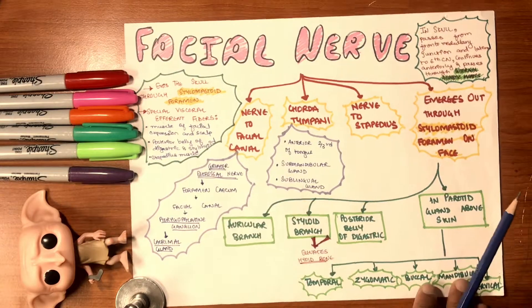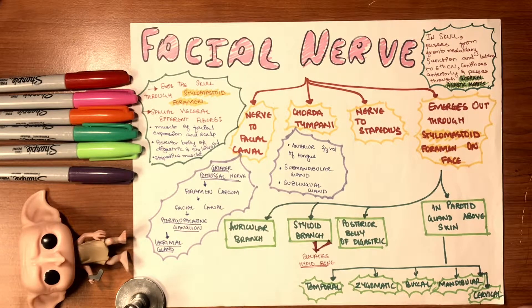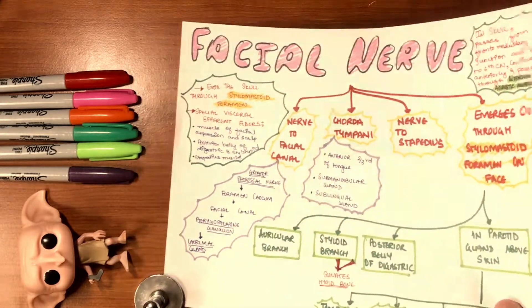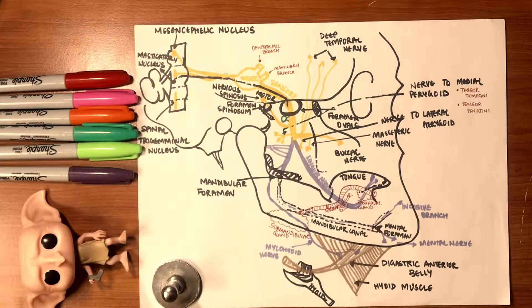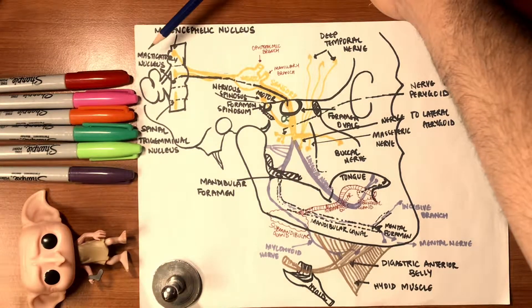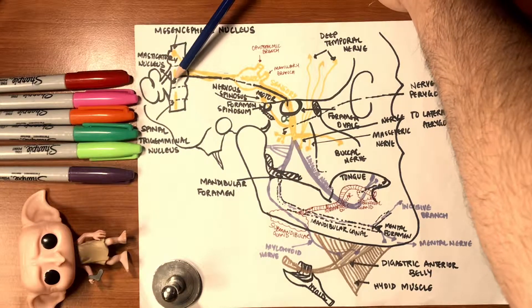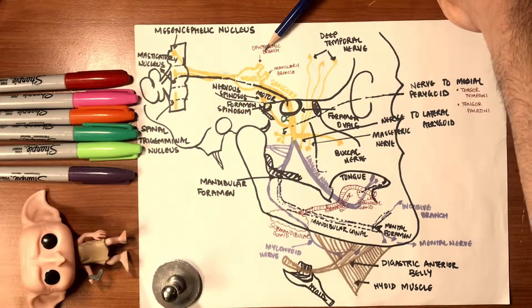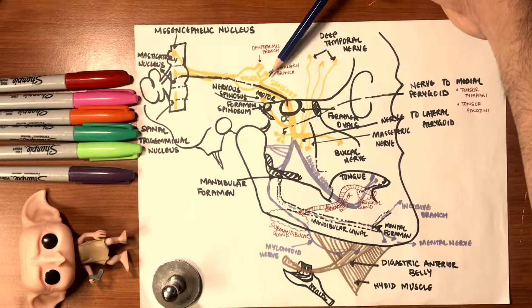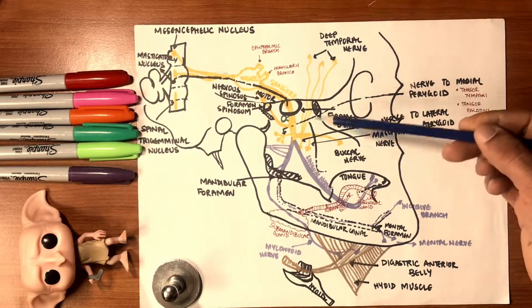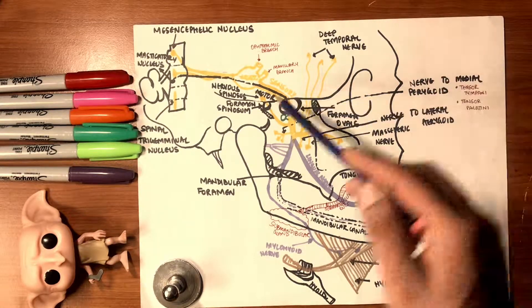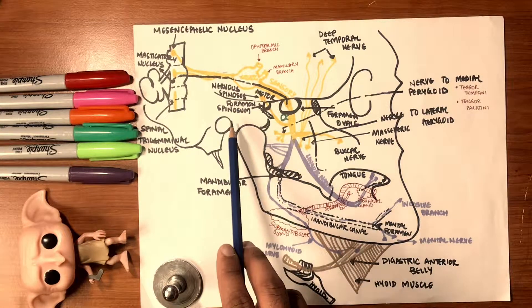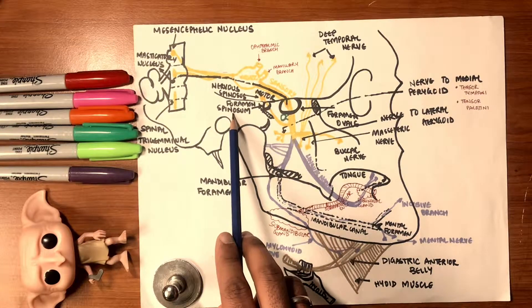All of these documents will be available on Instagram and Facebook. The detailed schematic diagram shows the masticatory nucleus giving off the ophthalmic and maxillary branches, then the mandibular branch entering the face through foramen ovale with motor innervations. The anterior trunk and posterior trunk are both shown, with foramen spinosum taking two nerves back into the skull.